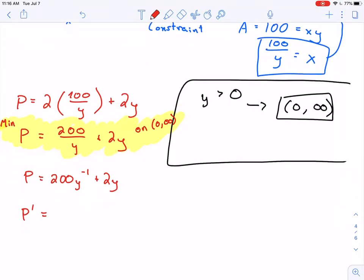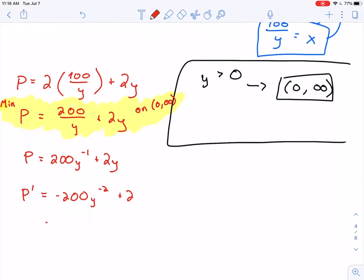Here, P prime is negative 200y to the minus 2 power plus 2, which I don't, you know me, I don't like to work with negative exponents. So this is really negative 200 over y squared plus 2. This is my derivative, P prime.